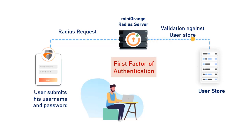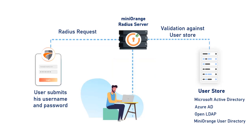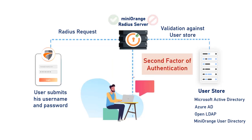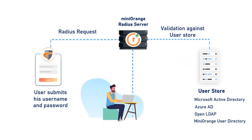The user can be validated against any user directory like Microsoft Active Directory, Azure AD, OpenLDAP, or you can keep users in the Mini Orange user directory as well. After the first level of authentication, Mini Orange prompts the user with two-factor authentication and grants or revokes access based on the 2FA input by the user.